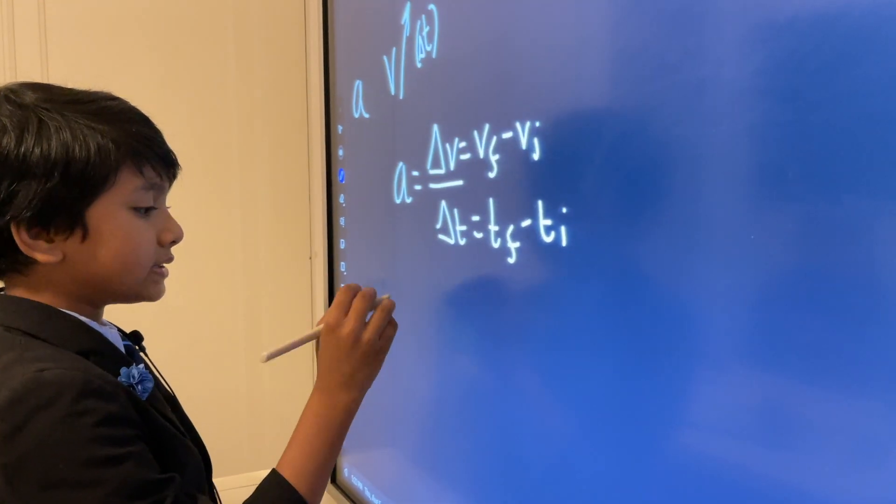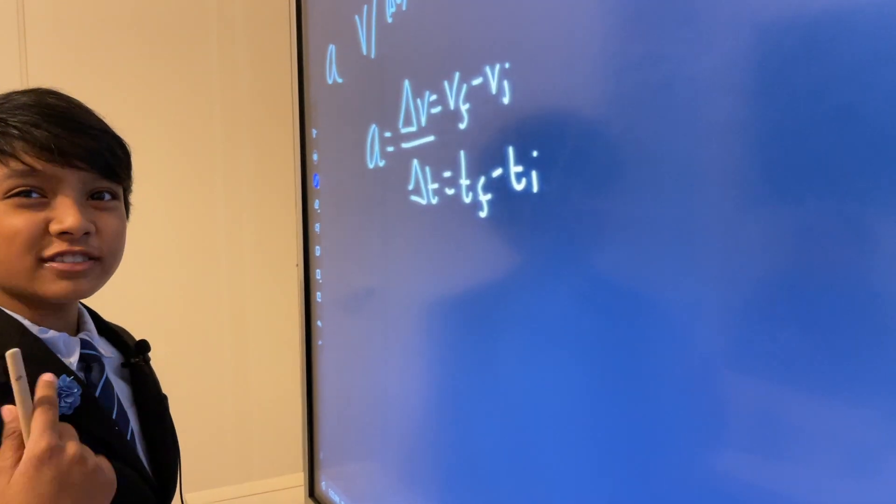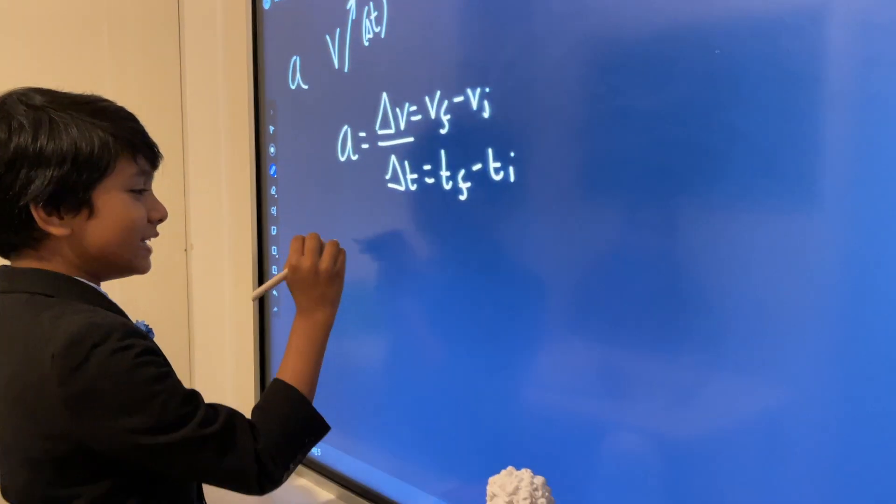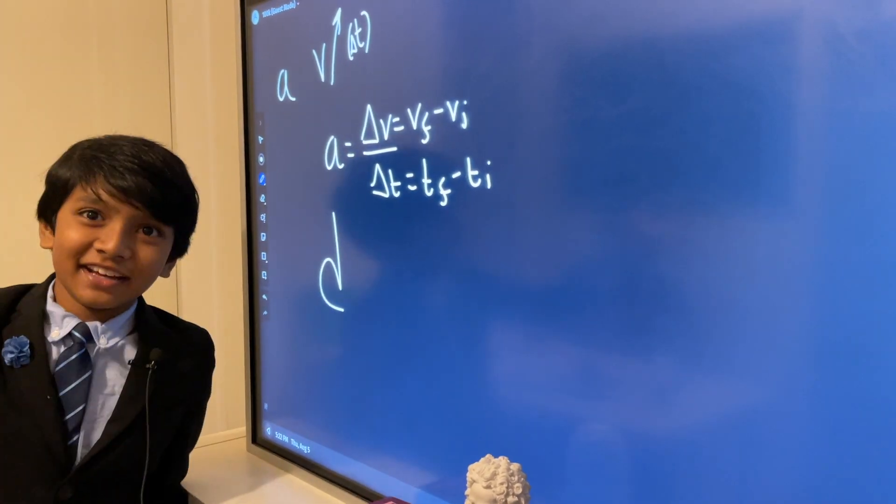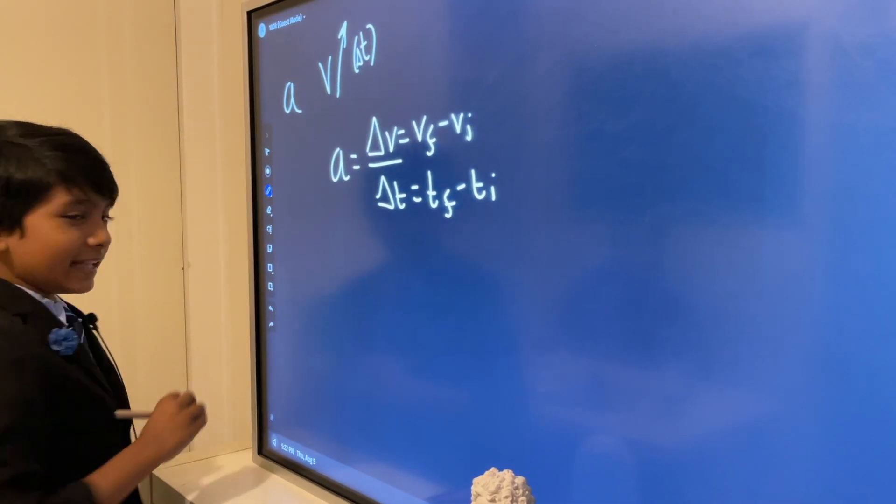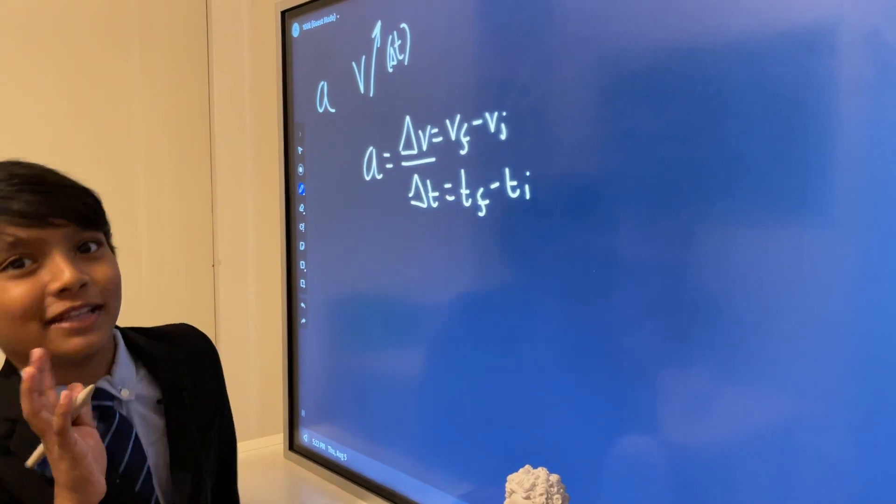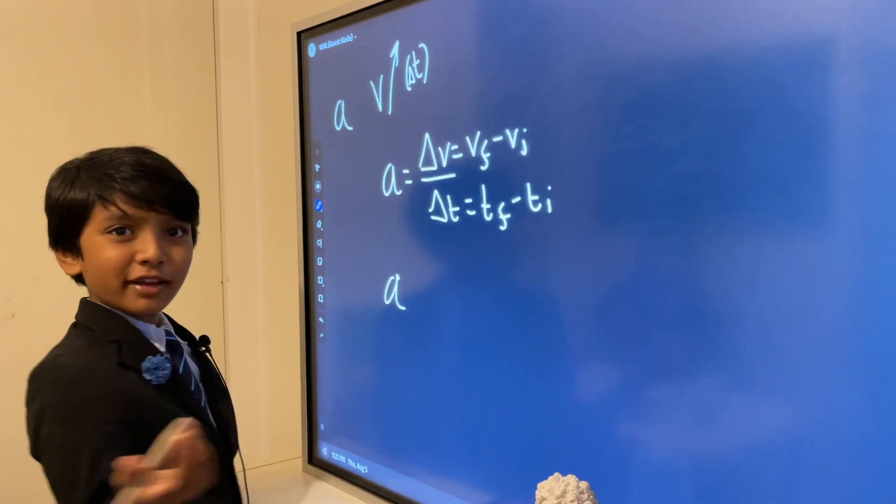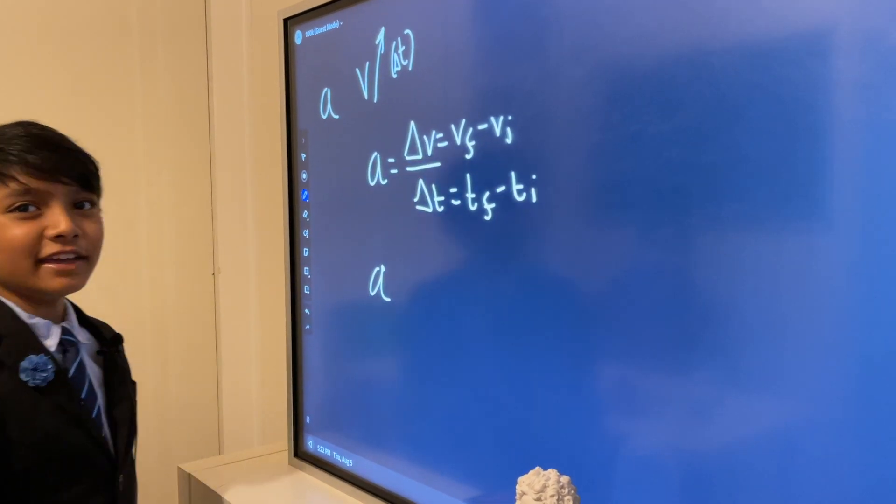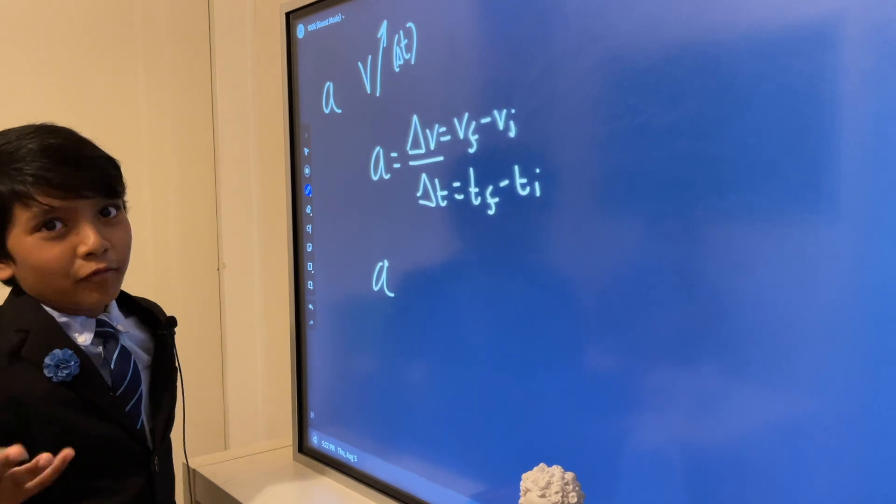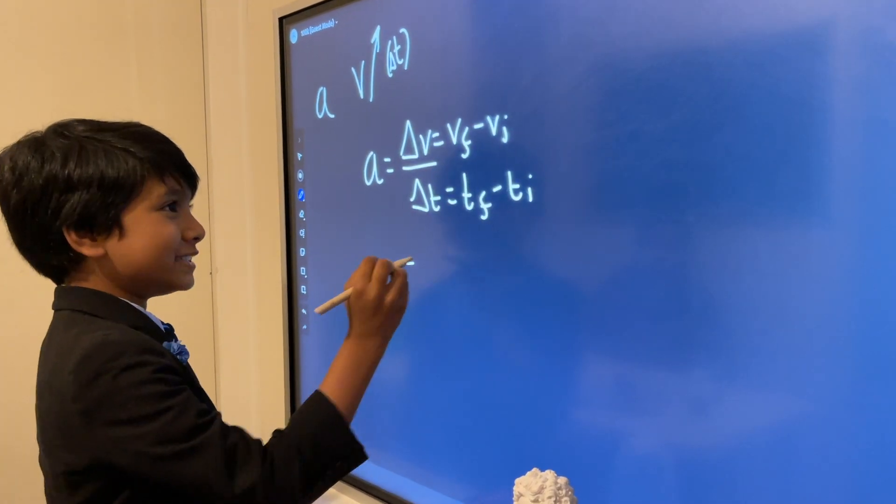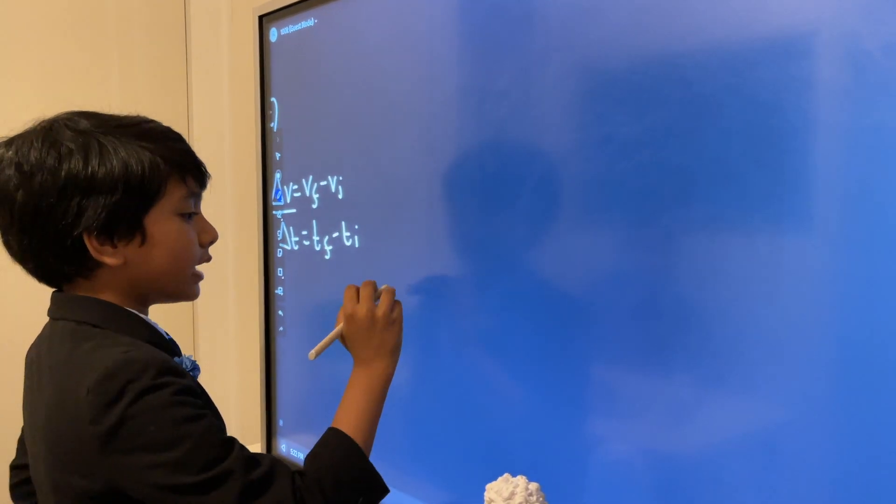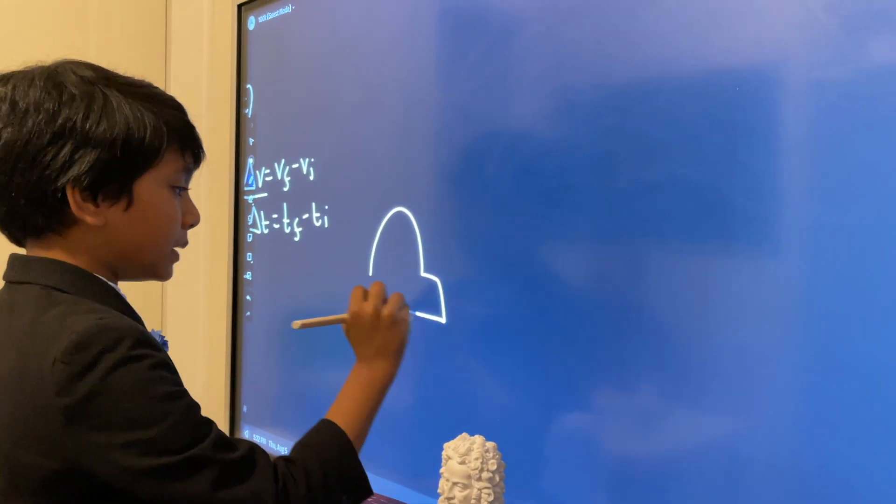Acceleration also has an opposite side we call deceleration, and deceleration isn't called d - that would be ridiculous, then we'd confuse it with distance and maybe displacement since it's a vector as well. With acceleration, we still keep the a sign even when it's decelerated. But what we do is change it up another way, because if you're decelerating, that means you are losing speed instead of gaining speed.